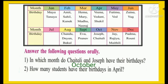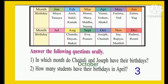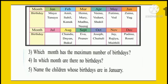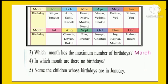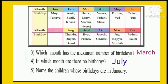How many students have their birthdays in April? Tell me — yes, 3: Veena, Vedanta, and Sakeel. Which month has the maximum number of birthdays? See from January to December — yes, March has the most birthdays. In which month are there no birthdays? Yes — July. There are no birthdays in July.